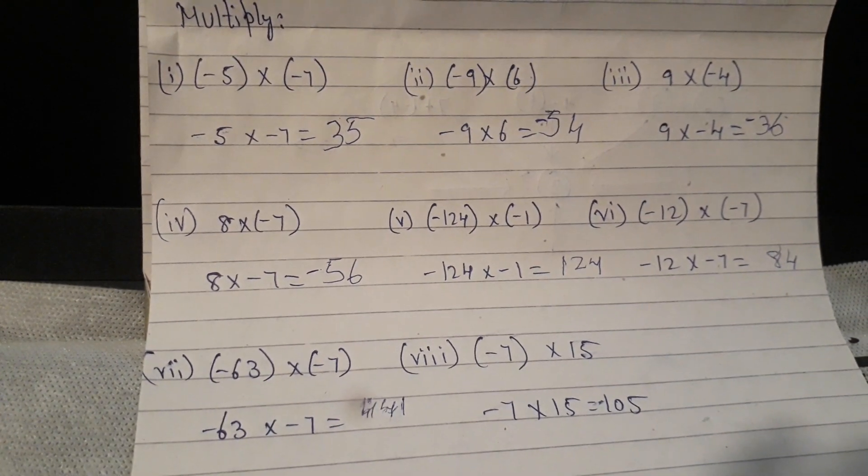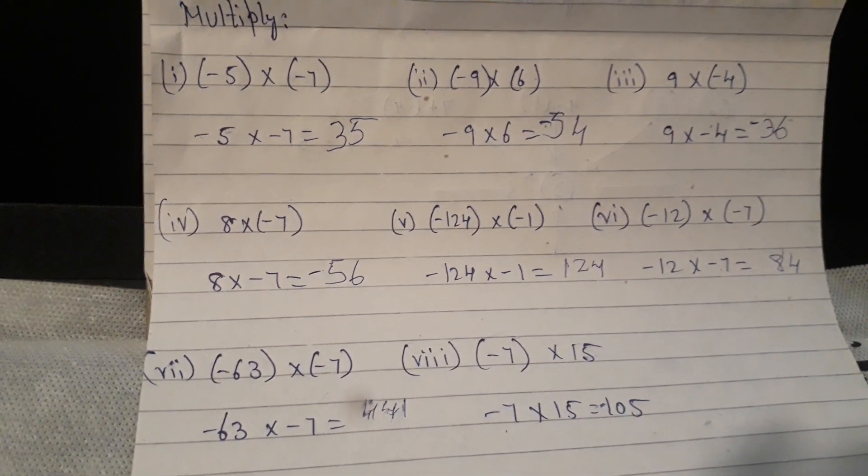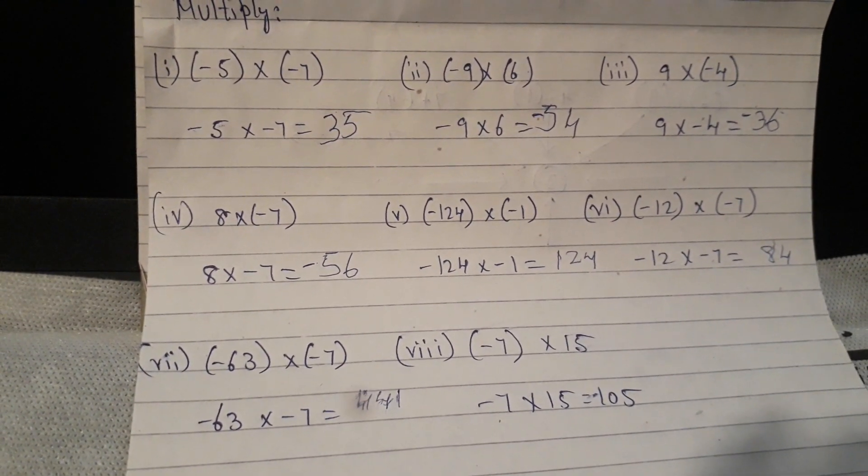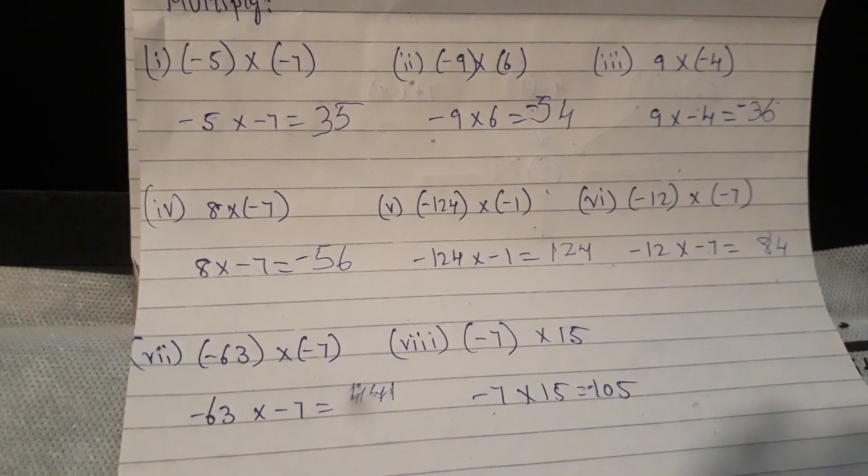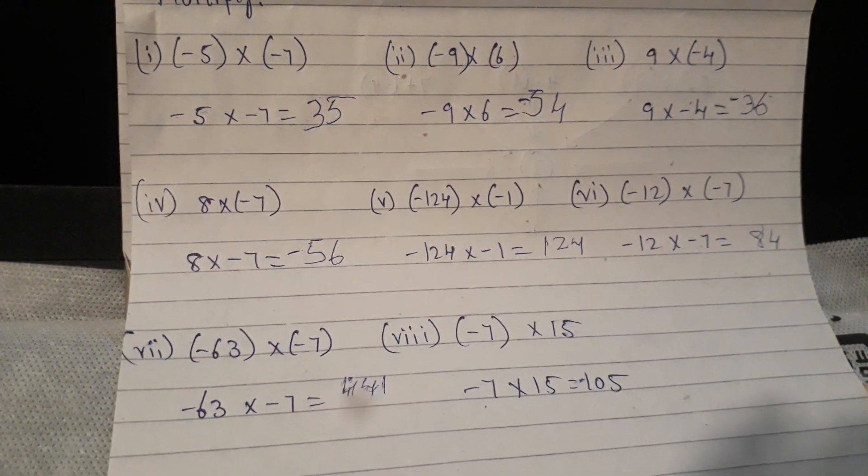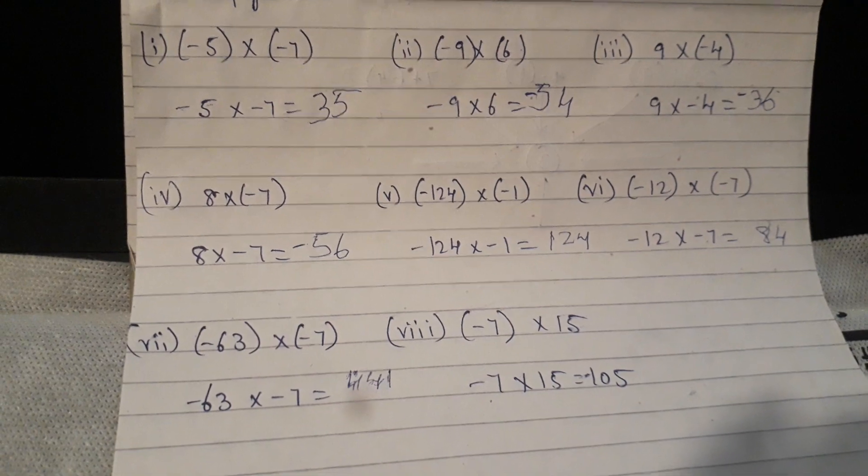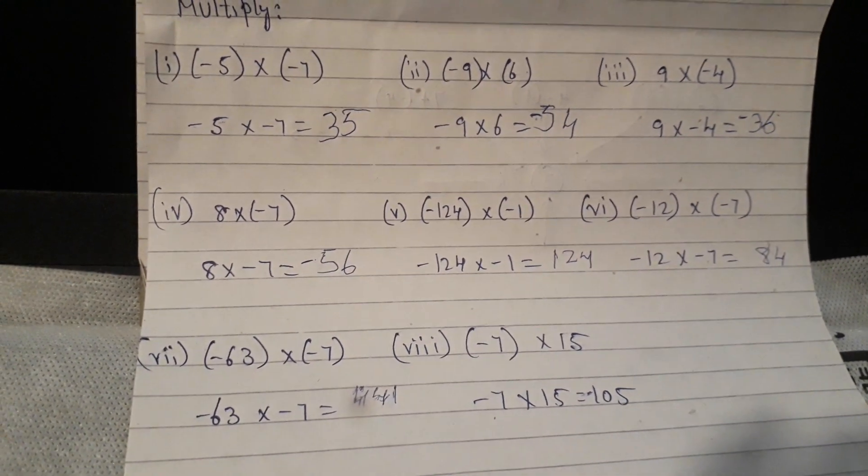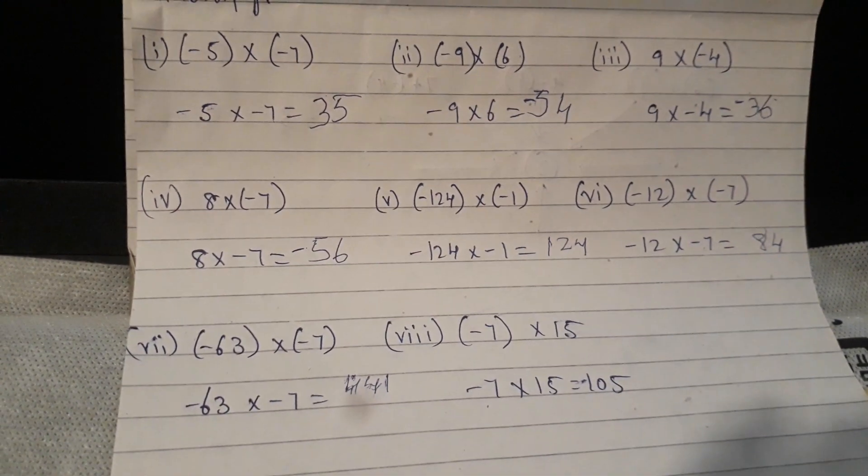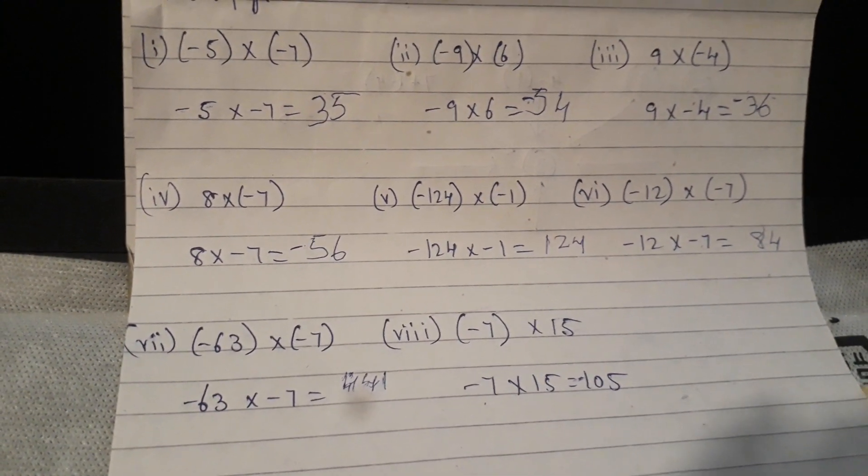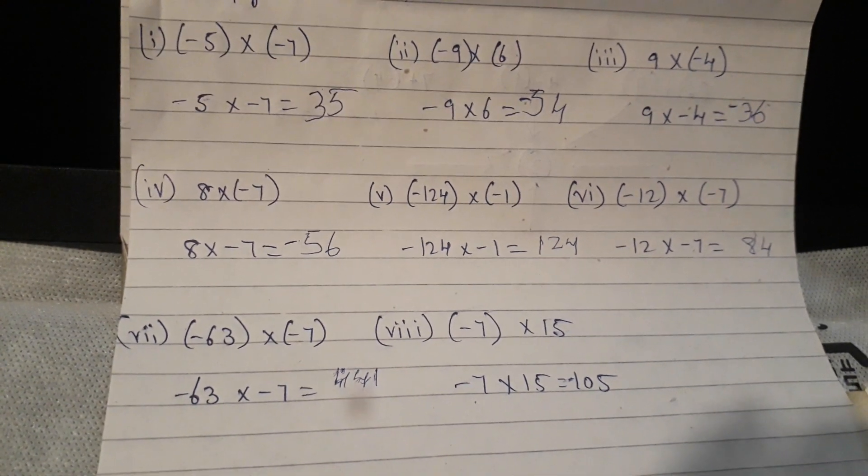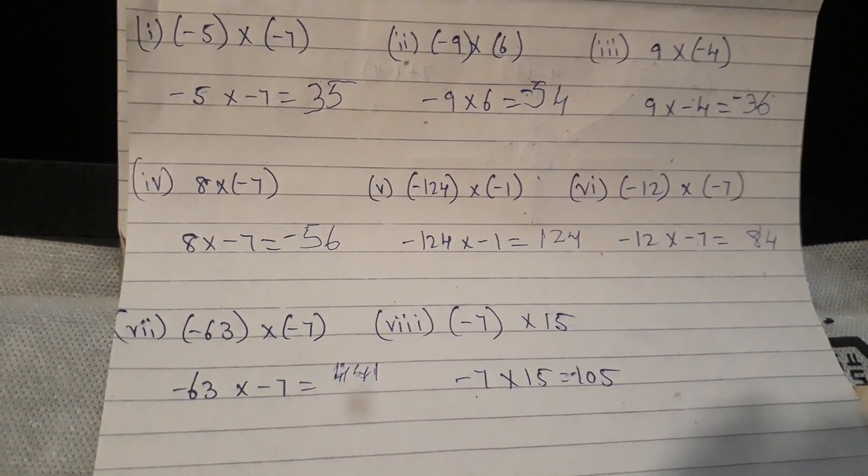With these sums, I guess you must have all understood the complete concept of applying the three rules. The first rule says positive integer into positive integer will give you an answer in positive integer. Second rule says that a positive into negative integer or a negative into positive integer will always give you an answer in negative integer. And the third rule says that a negative integer into a negative integer will always give you an answer in positive integer.